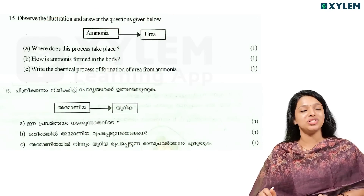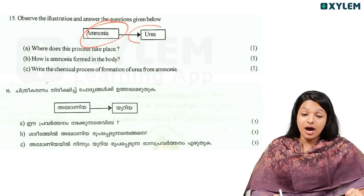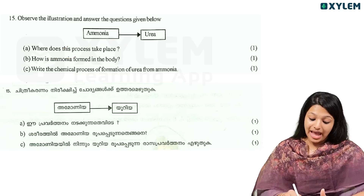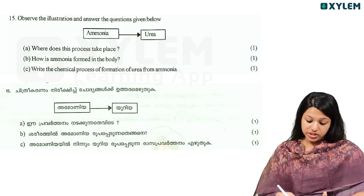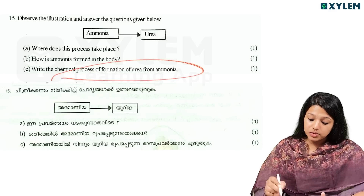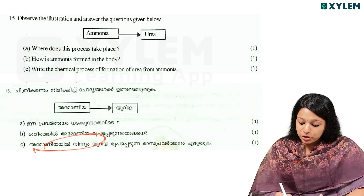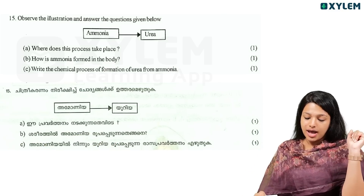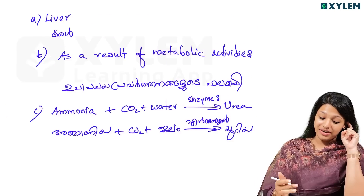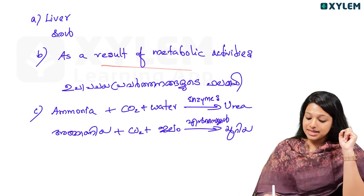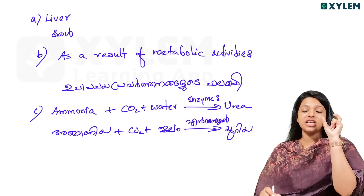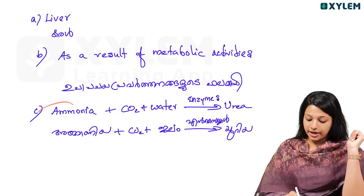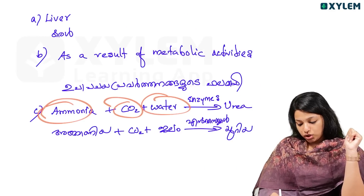Observe the illustration and answer the question. Ammonia is shown in the diagram alongside urea. How is ammonia formed in the body? As a result of metabolic activities, the by-products include ammonia, carbon dioxide, water, and enzymes.